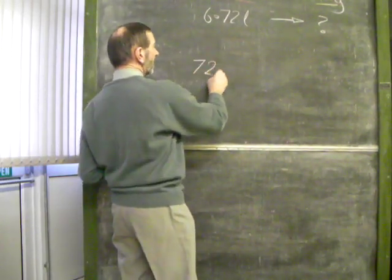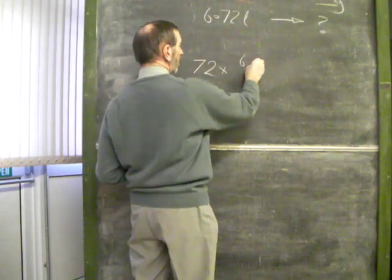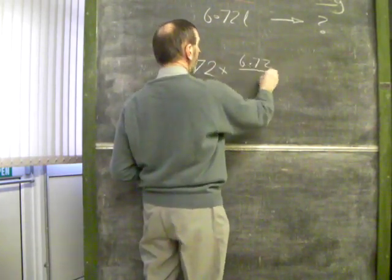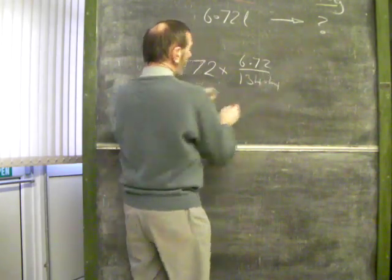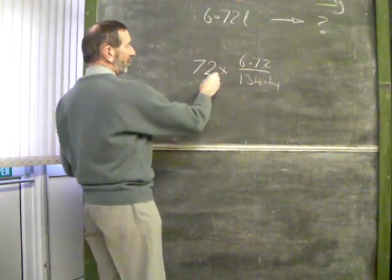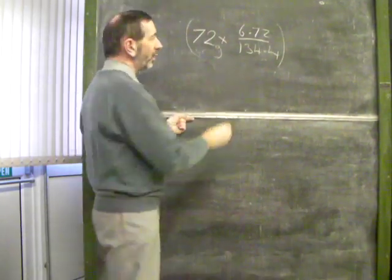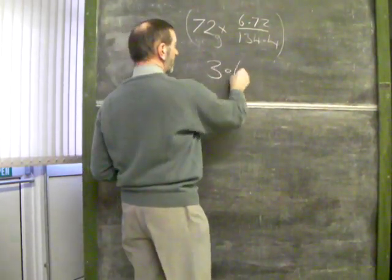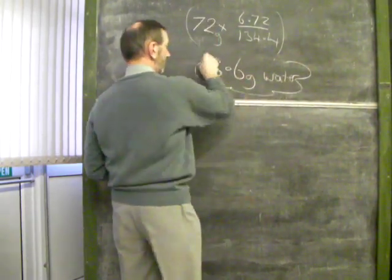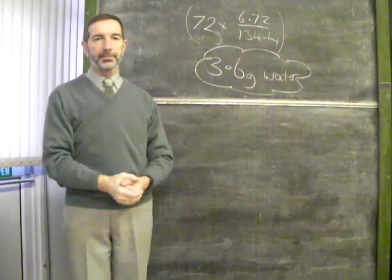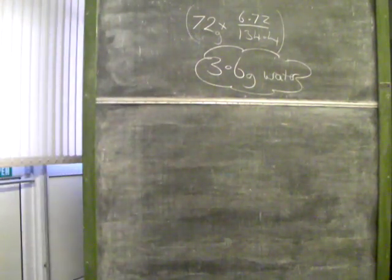That means taking the 72 and making it smaller by putting the smaller quantity on top and the larger quantity below. We're looking at a fraction of 72 grams. When we do the sum, the answer comes to 3.6 grams of water. You can check it out.